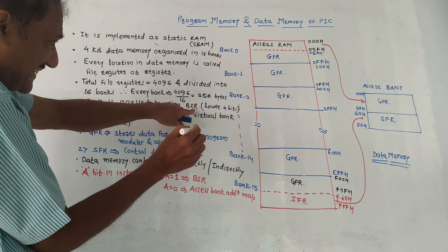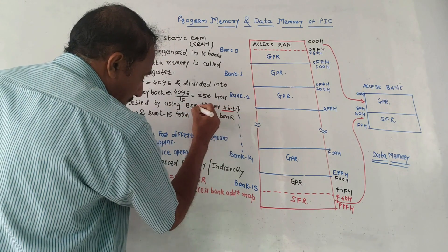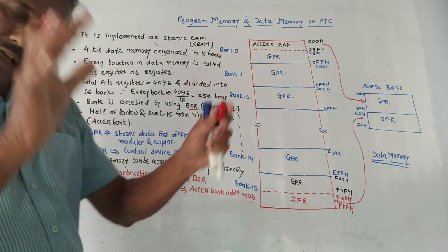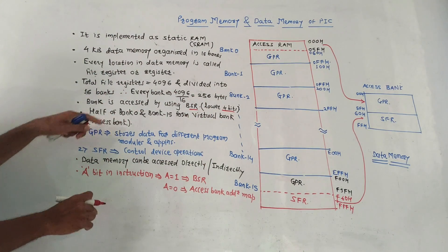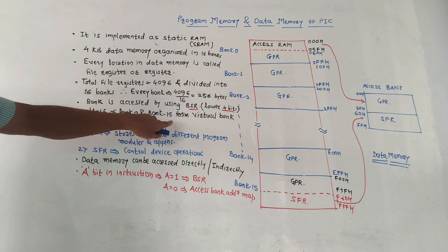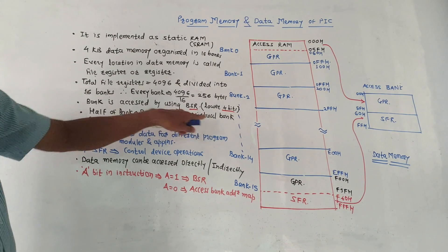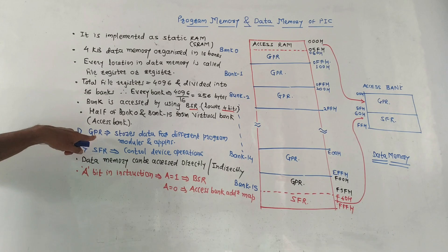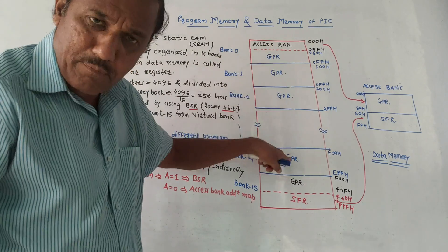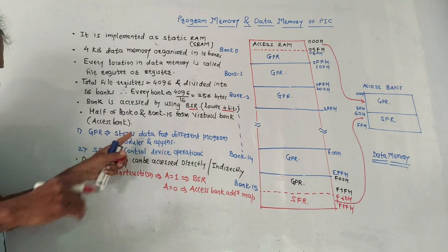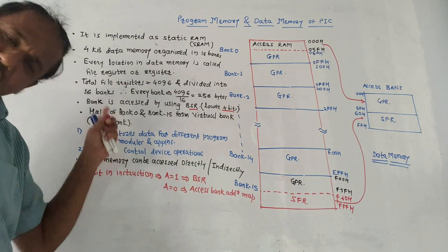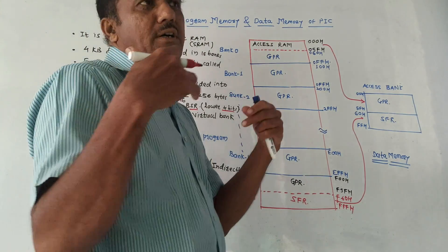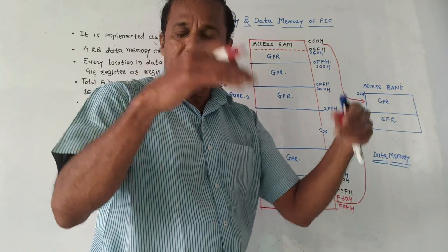To access any bank, the lower four bits of the Bank Select Register are used, while the upper four bits are unimplemented, using a total of 8 bits. The upper portion of bank 0 and lower portion of bank 15 form the virtual access bank. There are two types of registers: GPR (General Purpose Registers), used to store data for different program modes and applications.